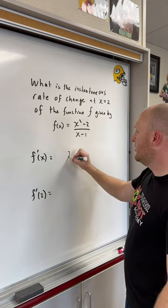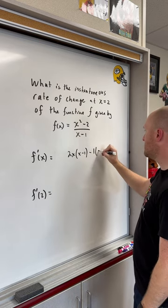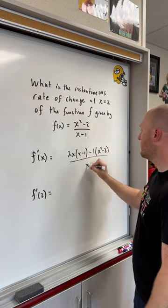The derivative of the top times the bottom minus the derivative of the bottom times the top, all over the bottom squared.